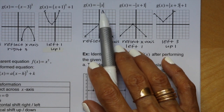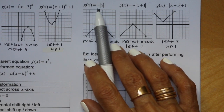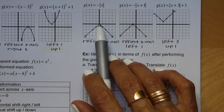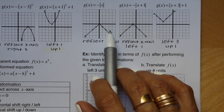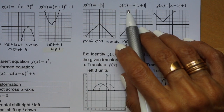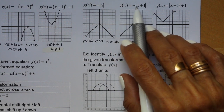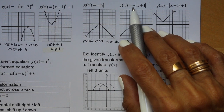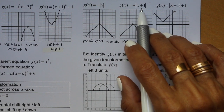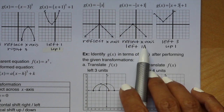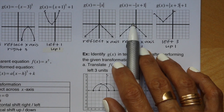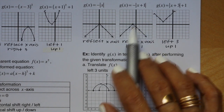Here we have g of x equals negative absolute value of x. The negative in front reflects the graph across the x-axis. Leave the vertex at (0, 0), then go over 1 down 1 on both sides — the V opens down. The next example says g of x equals negative absolute value of (x plus 1). Again the negative reflects across the x-axis, and the plus 1 inside is a horizontal movement but opposite, so we shift left 1. Move the vertex left 1, then go right 1 down on both sides.